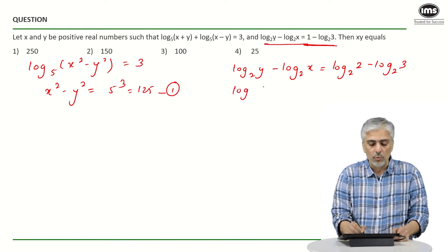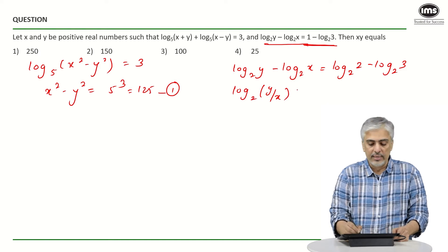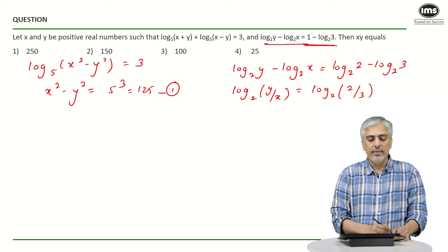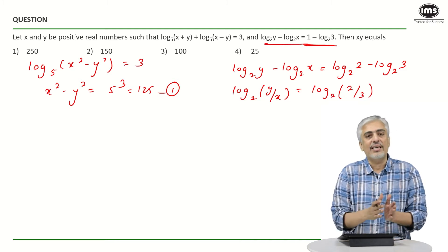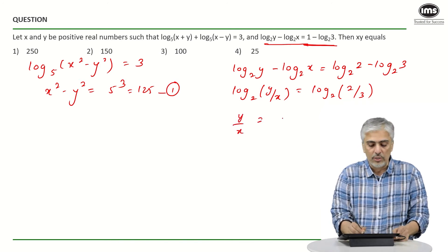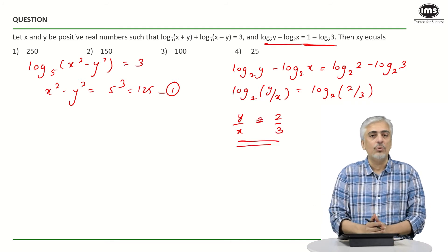So left side I will get log(y/x) to the base 2 is equal to log(2/3) to the base 2. Right? And now if I just get rid of logs on both sides, so I get y/x is equal to 2/3. Okay? Which means x/y is 3/2.